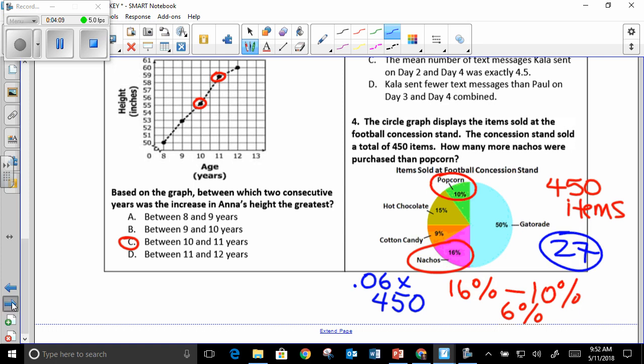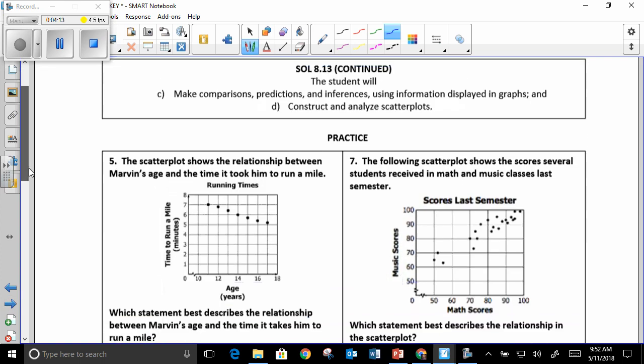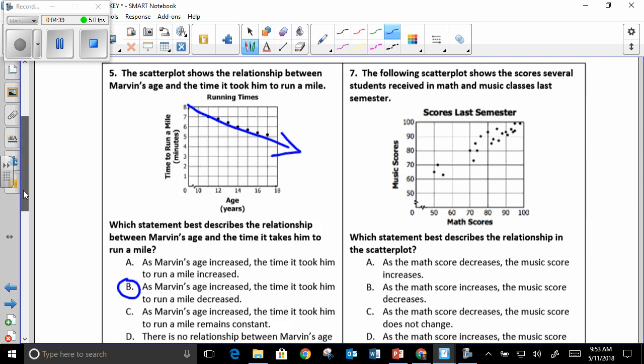Next page. We're going to continue the same SOL. Number five, we're talking about a scatter plot that shows Marvin's age and the time it took him to run a mile. As Marvin's age increases, it took him to run, it decreased. So the answer is B. As one increases, one decreases.